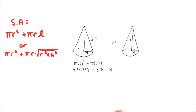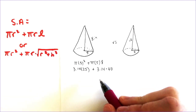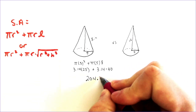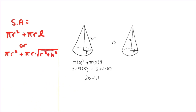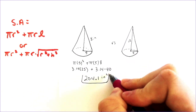I'm going to use 3.14 for pi. So we got 3.14 times 25 — that's what 5 squared is — and then 3.14 times 40. When we add all that together, we're going to get a total answer of 204.1. Technically, that would be inches squared because we're dealing with area.